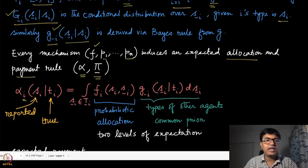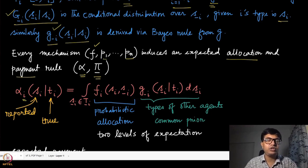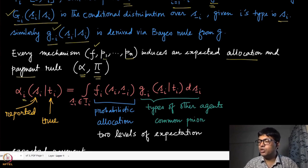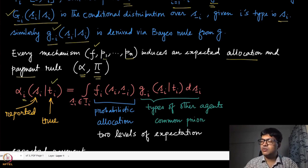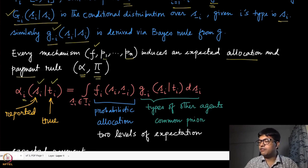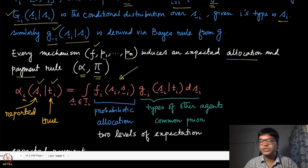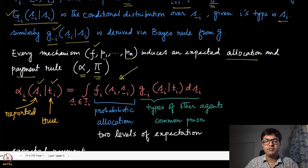The α_i component for player i is no longer a function of s_{-i}, because we take the expectation with respect to s_{-i}. Therefore it is only a function of two things: what the true type is, and what the reported type is. This is defined by integrating over s_{-i} using the conditional belief.